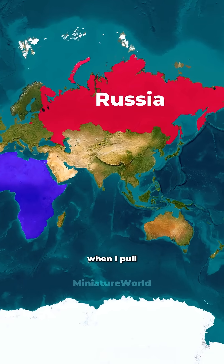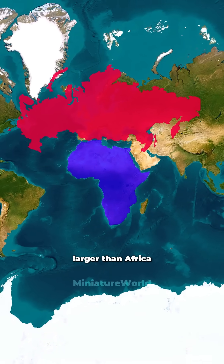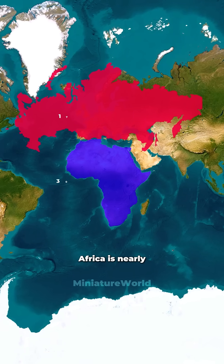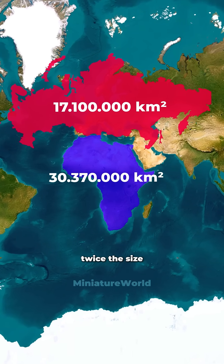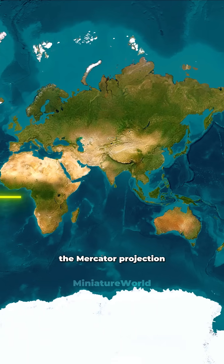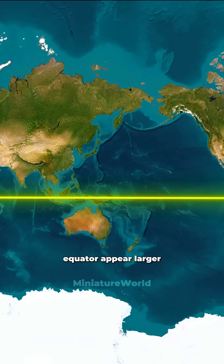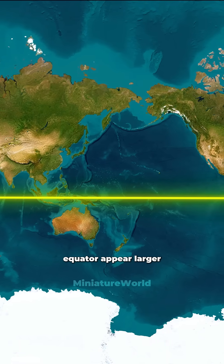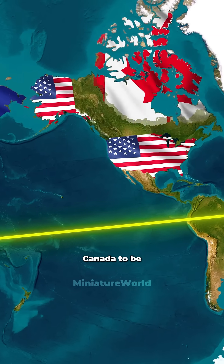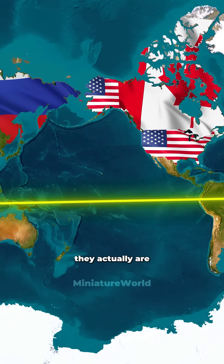Another example is when I pull Russia down to Africa. It seems much larger than Africa, but in fact Africa is nearly twice the size of Russia. This is because the Mercator projection makes land areas farther from the equator appear larger, causing countries like Russia, the U.S., or Canada to be shown bigger than they actually are.